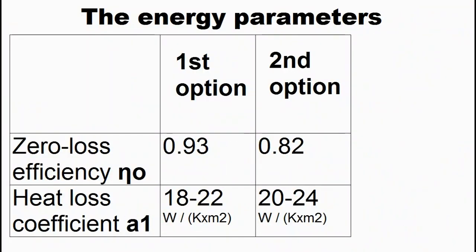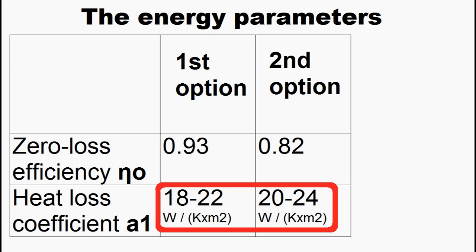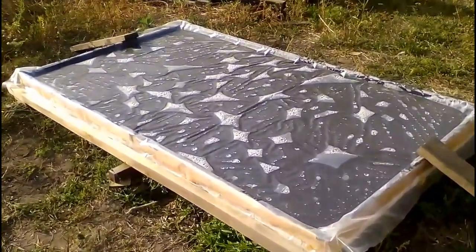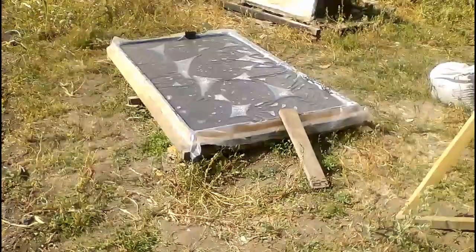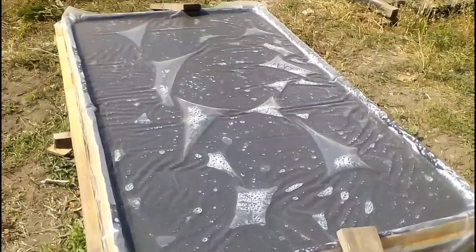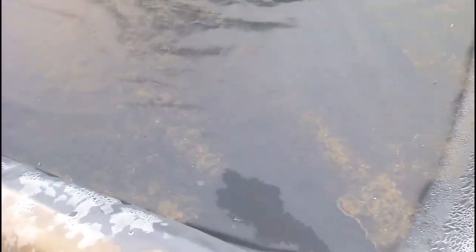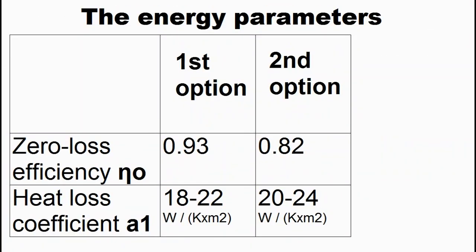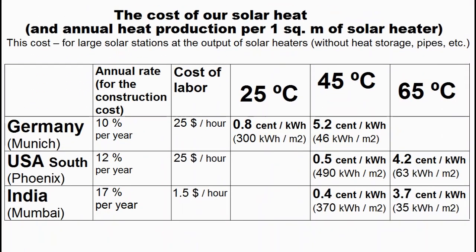These are the results of my measurements of the energy parameters of both options, but this coefficient depends on the wind — the higher the wind speed, the higher the coefficient. A real solar heater is intermediate between the first and second options, and the smaller the relevant areas, the closer to the first option. The energy parameters of a real solar heater will be slightly worse due to dirt on the film surface and other reasons, and that is why I use degraded energy parameters for these calculations.